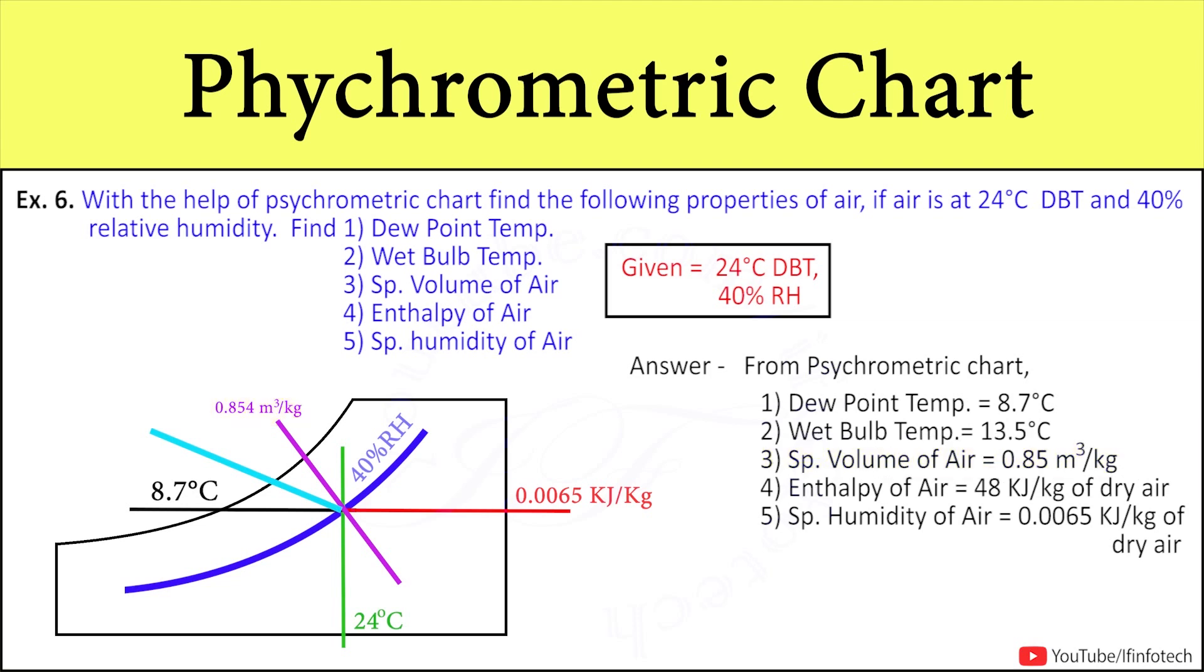And here, the inclined line is specific enthalpy line. So, in this way, with the help of psychrometric chart, we can determine different properties of air at 24 degrees Celsius dry bulb temperature and 40% relative humidity.